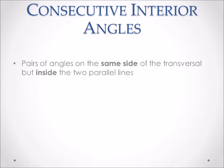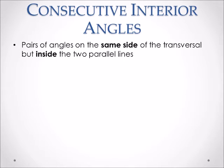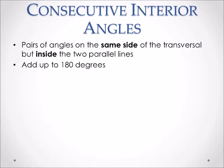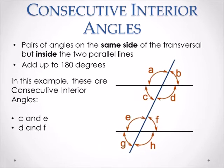Consecutive interior angles are pairs of angles on the same side of the transversal, but inside the two parallel lines. The word consecutive means the same or one after another, whereas interior means inside — so you want same side on the inside. They also add up to 180 degrees. With two parallel lines cut by a transversal, the consecutive interior angles are C and E, and D and F.